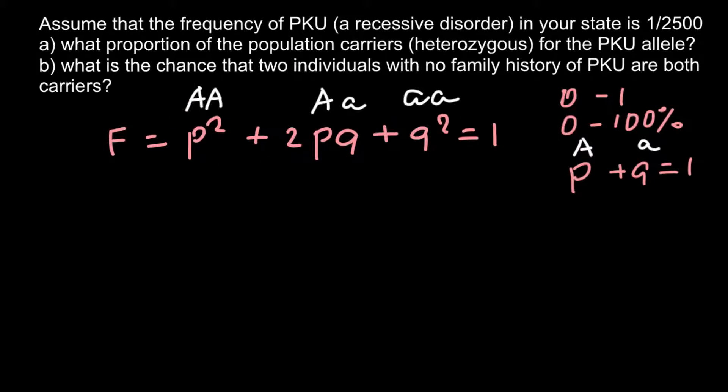So our question is we need to find how many of the people in this community would be heterozygous or would be carriers. We know that people who express this genetic disorder phenotypically can be found in the frequency of 1 in 2500 people. So we have to divide 1 by 2500, and we would be able to find the decimal number of this frequency of this condition. So this is going to be 0.0004.